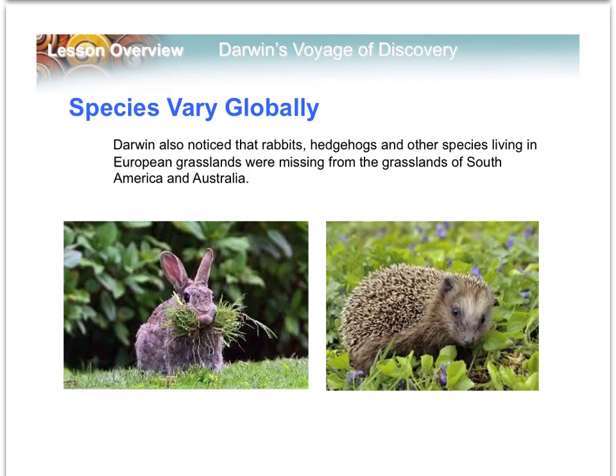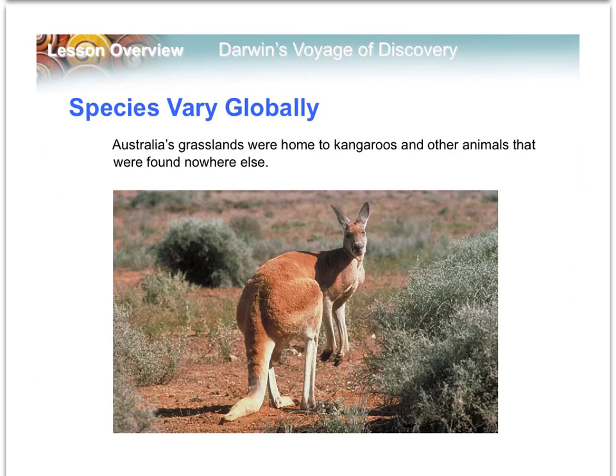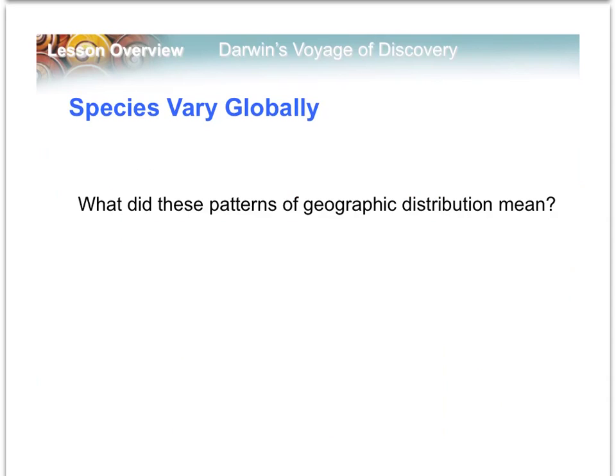Darwin didn't just notice that there were similar, unrelated animals on different continents. He also noticed that some continents didn't have animals he was familiar with back in England, like the rabbit or the hedgehog. And he noticed that other continents had very peculiar-looking animals that he didn't see anywhere else. While Darwin noticed these patterns, he still didn't really understand what this geographic distribution meant to the overall picture of biodiversity.